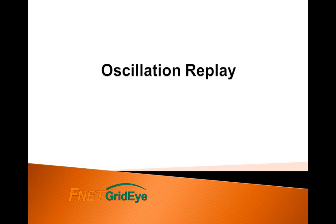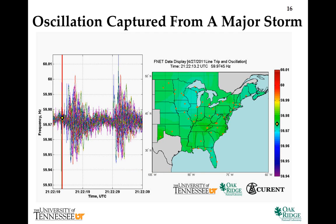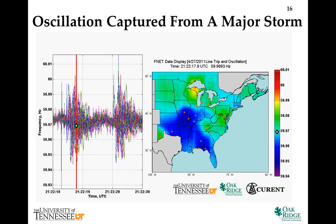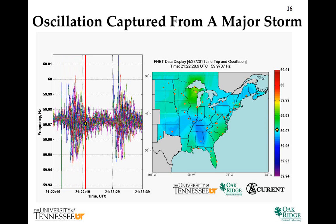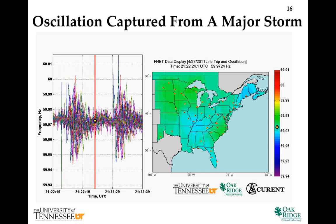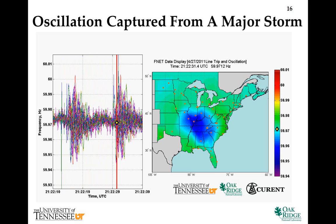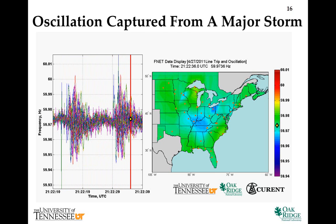In addition to real-time applications, we have also developed an event replay tool to generate oscillation event movies using synchrophasor data. On April 27, 2011, severe storms and tornadoes moved through the southeast, knocking out 11 of the 500 kV transmission lines. This video shows the oscillation caused by the line trips.